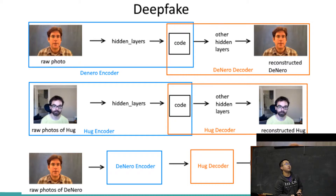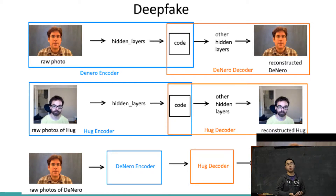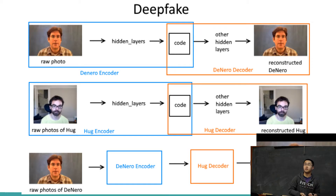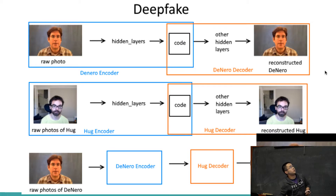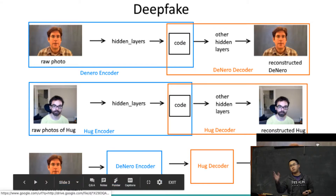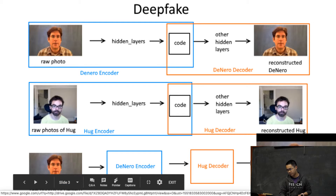We then send the compressed code into the Hogg decoder, which applies Hogg's facial details onto the skeletal information contained in the code and produces a somewhat reasonably realistic face swap.